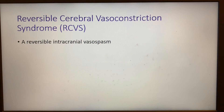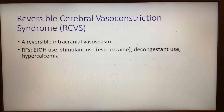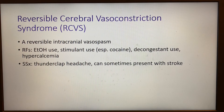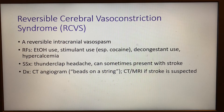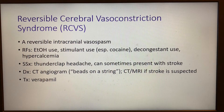Reversible cerebral vasoconstriction syndrome, or RCVS, is a reversible intracranial vasospasm. Risk factors include alcohol use, any stimulants but especially cocaine, decongestants such as pseudoephedrine, and hypercalcemia. Signs and symptoms include thunderclap headache, and sometimes this can also present with stroke. Diagnosis is made by CT angiogram, where you will see the characteristic beads-on-a-string appearance of the vessel. You can also order a CT and/or MRI as a stroke sequence if stroke is suspected concurrently. For treatment, you give verapamil.